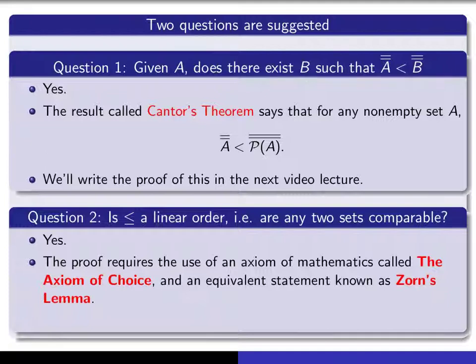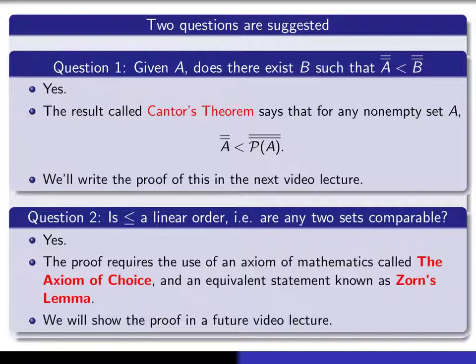The answer to the second question, also yes, that's a little bit more involved. It turns out that one requires a fundamental axiom of mathematics called the axiom of choice in order to do it, and I'll use a version of the axiom of choice which is known as Zorn's lemma to do that. So I'm also going to discuss that in an upcoming lecture.